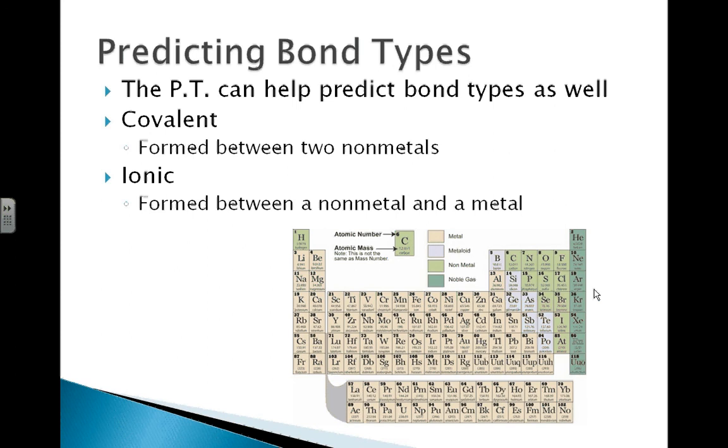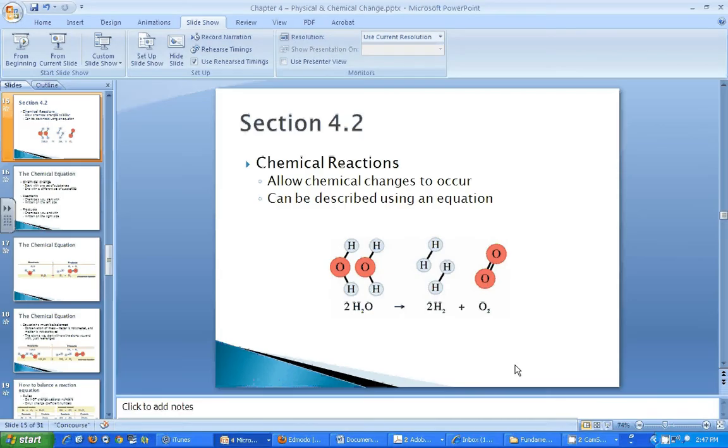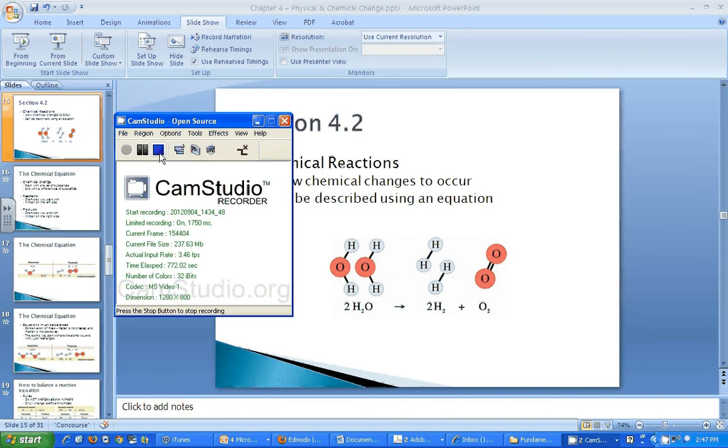For example, let's look at magnesium chloride. Here is magnesium, here is chloride. Metal, non-metal. So this must be an ionic bond. Or carbon dioxide, carbon, non-metal. Oxygen, non-metal. Two non-metals, this must be a covalent bond. And that will do it for the first section. I'll see you next time.